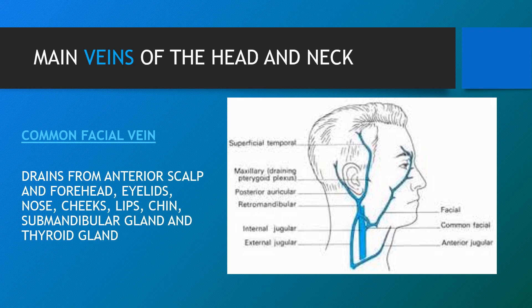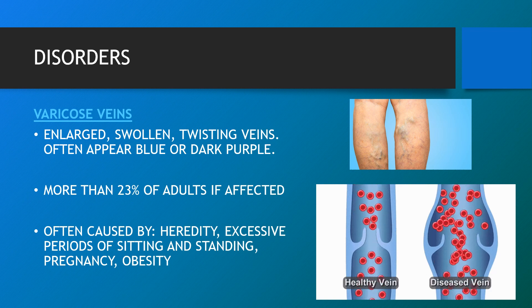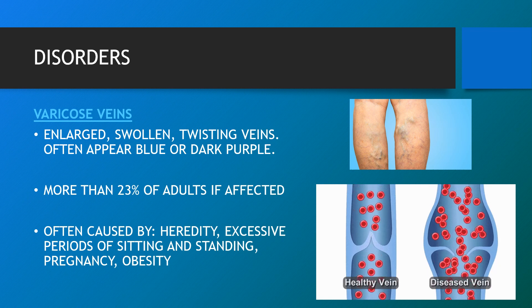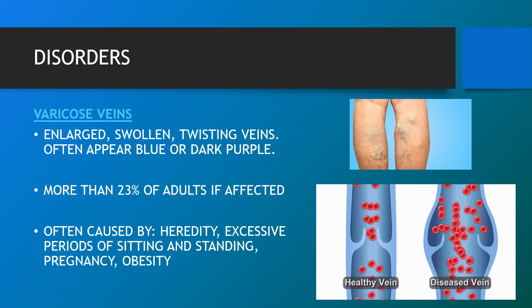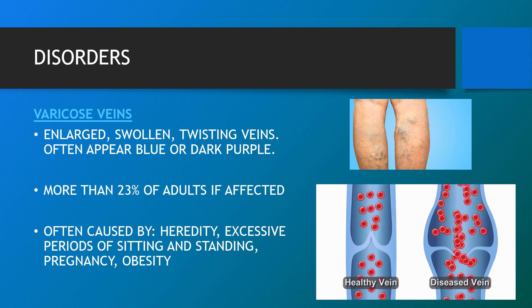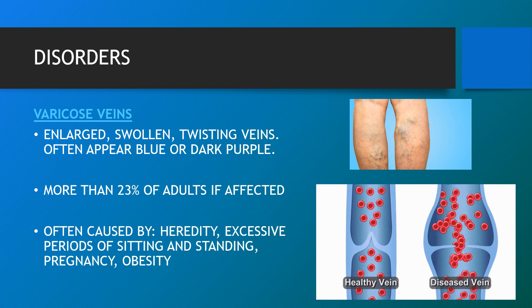Varicose veins are enlarged, swollen, twisting veins that often appear blue or dark purple. They happen when faulty valves in the veins allow blood to flow in the wrong direction or to pool. More than 23% of adults are affected. They are often caused by hereditary factors, excessive periods of sitting or standing, pregnancy and obesity.